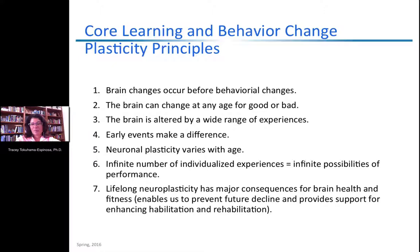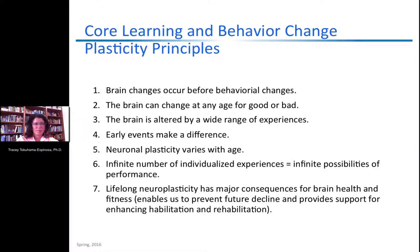Lifelong neuroplasticity has major consequences for brain health and fitness — it enables us to prevent further decline and support rehabilitation. Older people who take on new learning tasks and keep their brains active are less likely to go into cognitive decline early. Keeping active and using your brain is actually a way to prevent cognitive decline.